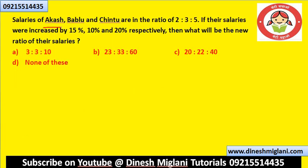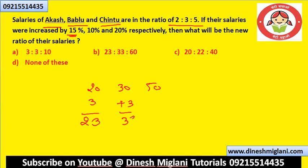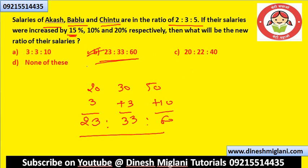Salaries of Akash, Bablu, and Chintu are in ratio 2:3:5, so 20, 30, and 50. Their salaries are increased by 15%, 10%, and 20% respectively, giving new salaries of 23, 33, and 60. The new ratio of their salaries is 23:33:60.